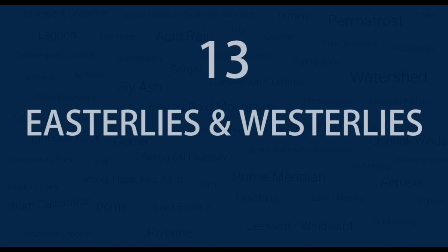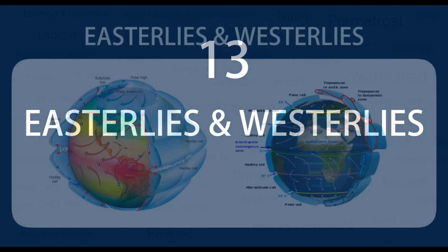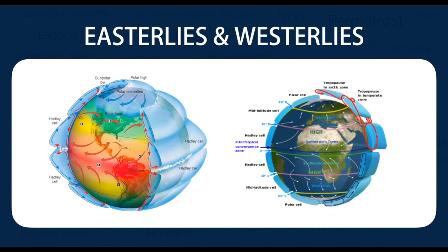Number 13 — Easterlies and Westerlies. Wind is the flow of air from high pressure to low pressure region. At the equator, air rises up creating a low pressure and cold air from higher latitudes rushes to fill up the space. Air rising at the equator sinks at the subtropical region — 30 degrees north and south in both hemispheres — thereby creating a circulation of surface air towards the equator. This circulation encounters the Coriolis force caused by the rotation of the earth.